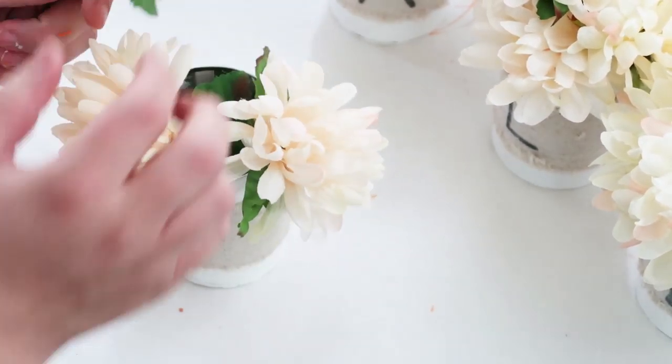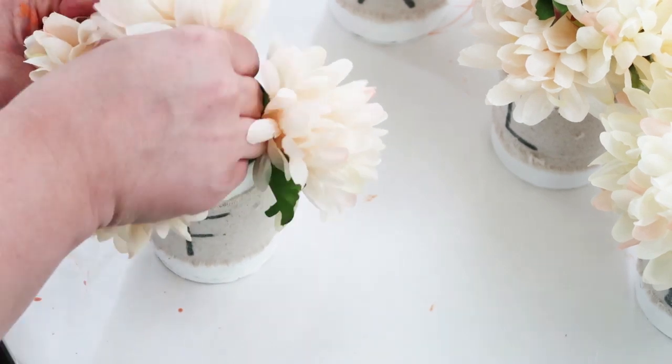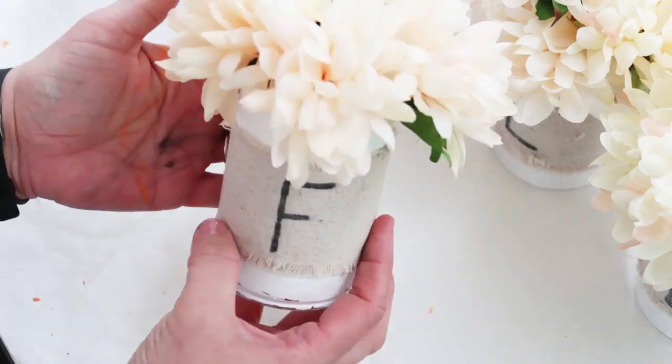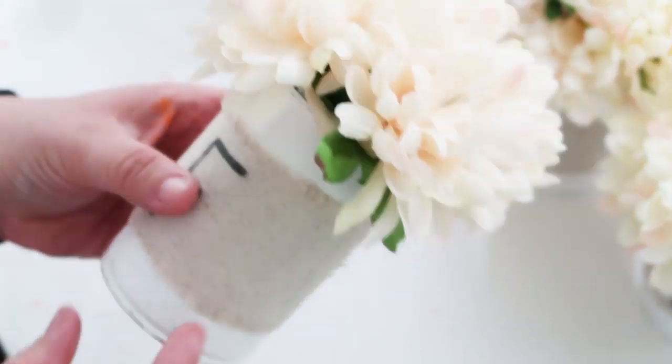I picked up this foam square from the Dollar Tree and I just cut it into four pieces and then hot glued it down in. And then to finish and complete the look I took some of these really darling florals that I picked up at the Dollar Tree. I picked up two bushels and it was enough for these four tins.